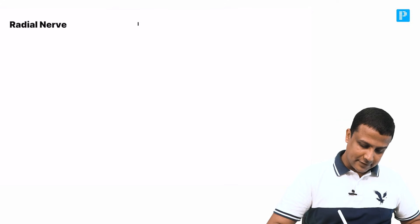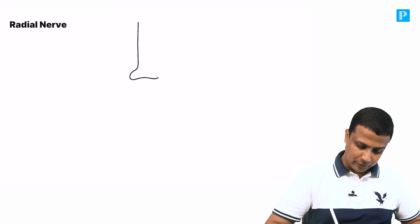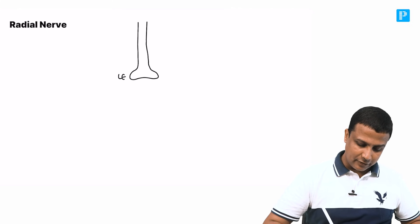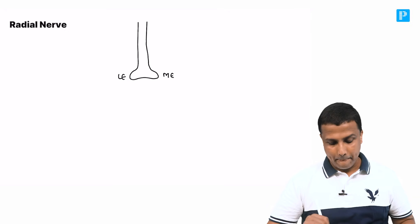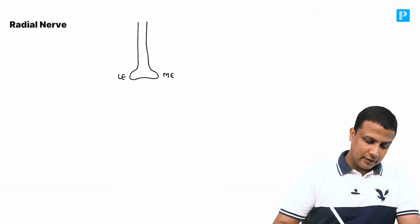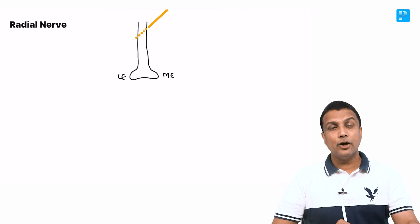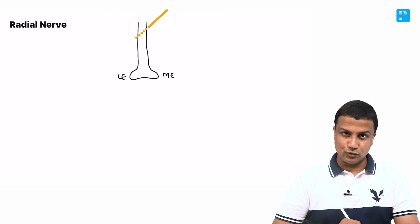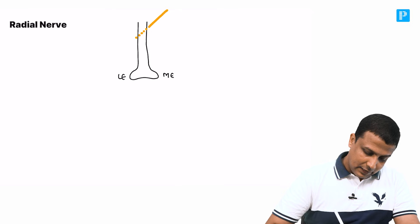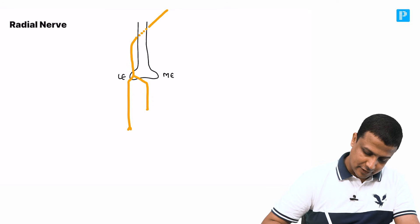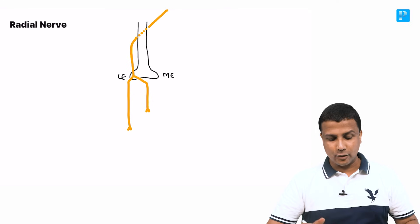Now, for example, if this is the lower end of the humerus, you will have the lateral epicondyle and the medial epicondyle. The radial nerve comes from the axilla and first passes behind the shaft of the humerus in a groove — referred to as the radial groove or spiral groove. It then passes to the lateral side of the arm, and right in front of the lateral epicondyle it divides into two branches: the superficial branch and the deep branch.